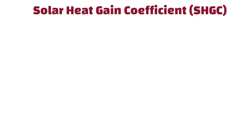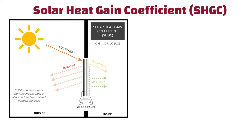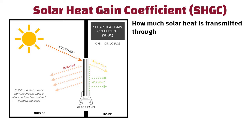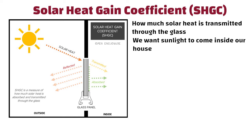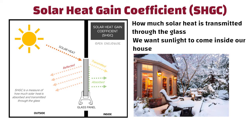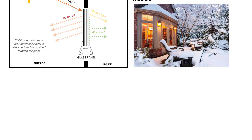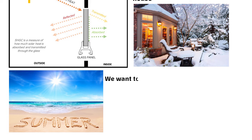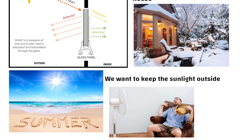Solar Heat Gain Coefficient — SHGC. SHGC measures how much solar heat is transmitted through the glass. Sometimes we want sunlight to come inside our house, especially in winter. But in the summertime, we might want to keep the sunlight outside because it can make your house too hot.